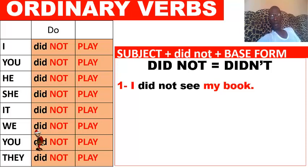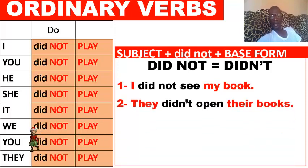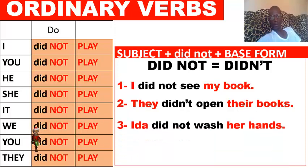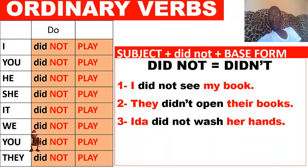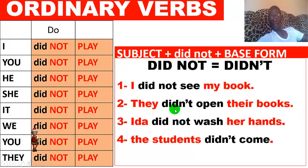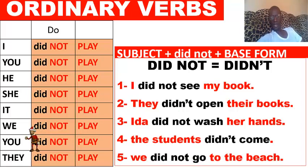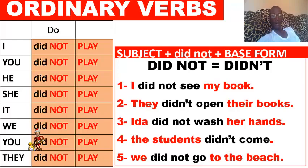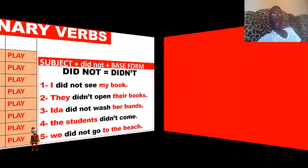Examples of negative form: I did not see my book. They didn't open their box. Ida did not wash her hands. The students did not come. We did not go to the beach. Vous avez la possibilité de mettre didn't ou did not — both are correct.